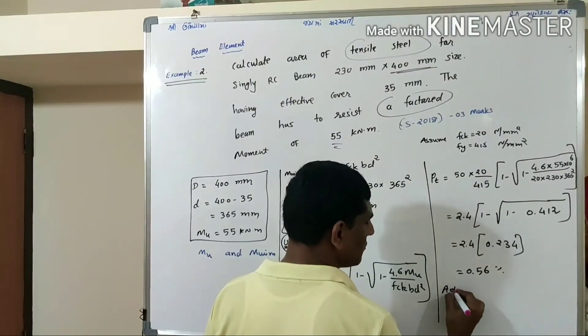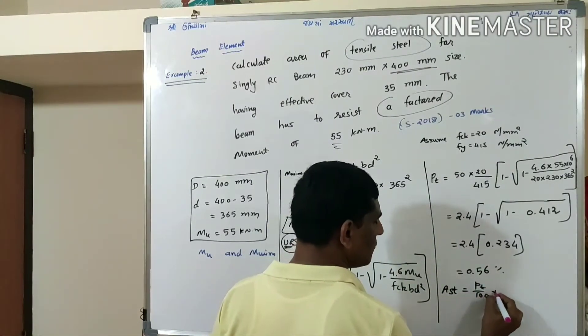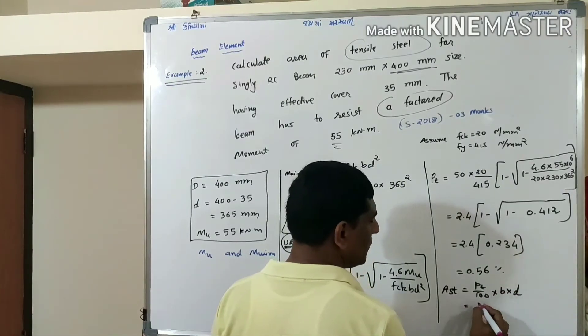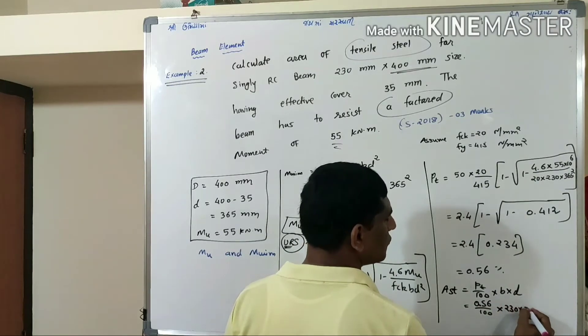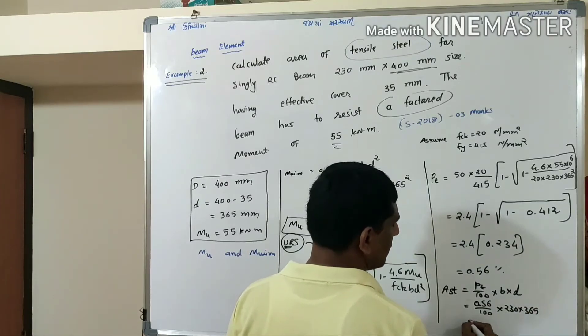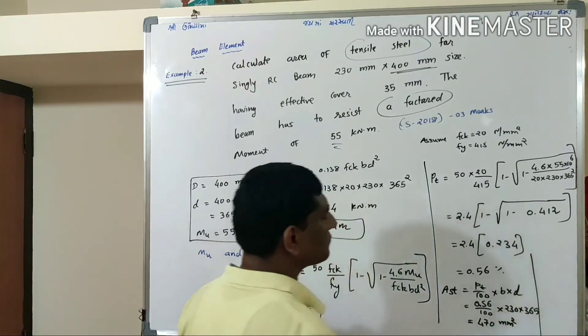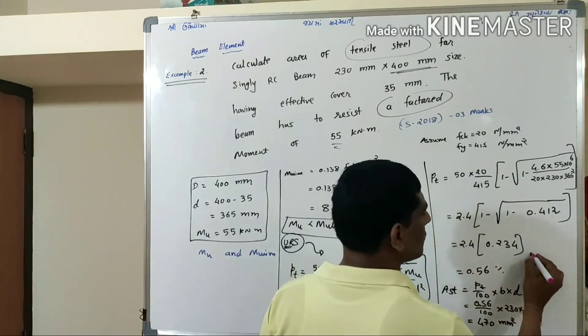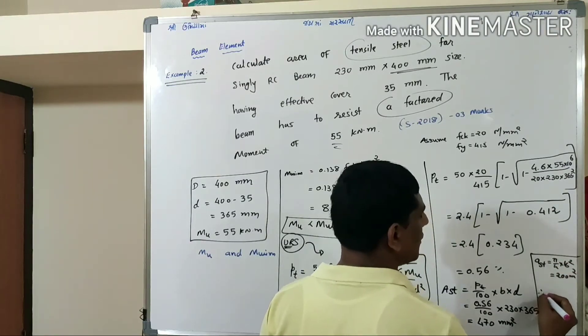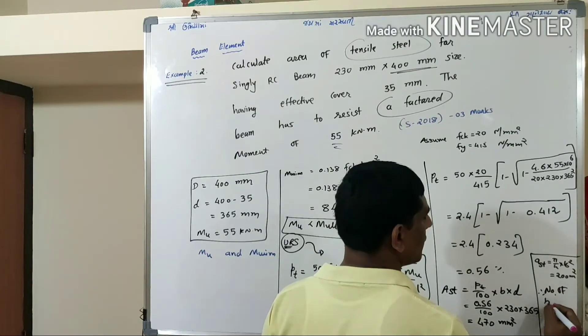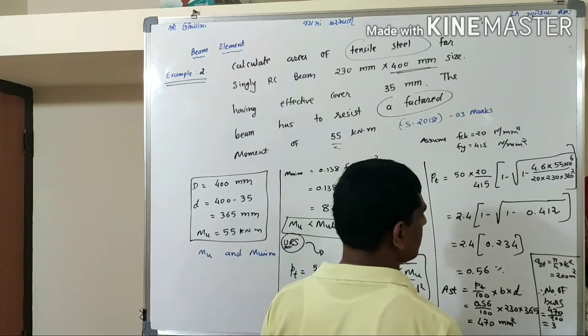Now AST = PT/100 × BD. So PT is 0.56 divided by 100 × 230 × 365 = approximately 470 mm². Let's consider 16 mm bar, so the area of π/4 × 16² is nearly 200 mm². Number of bars = 470/200 = approximately 3 numbers.